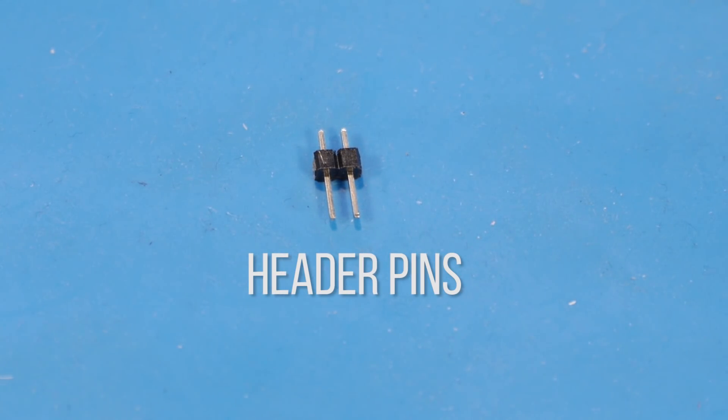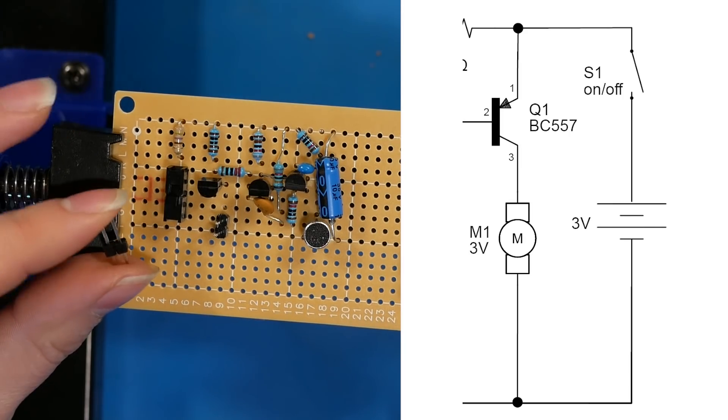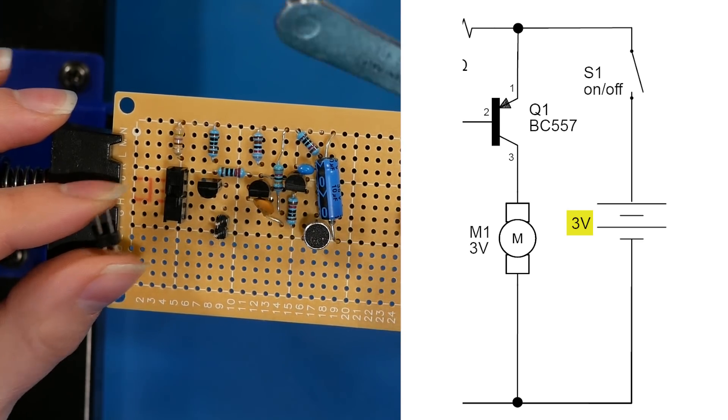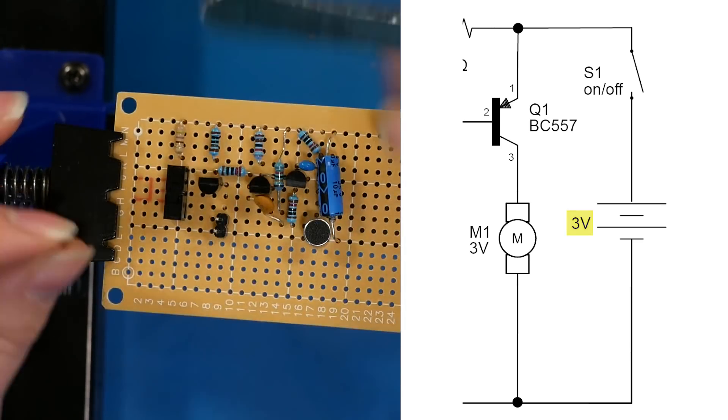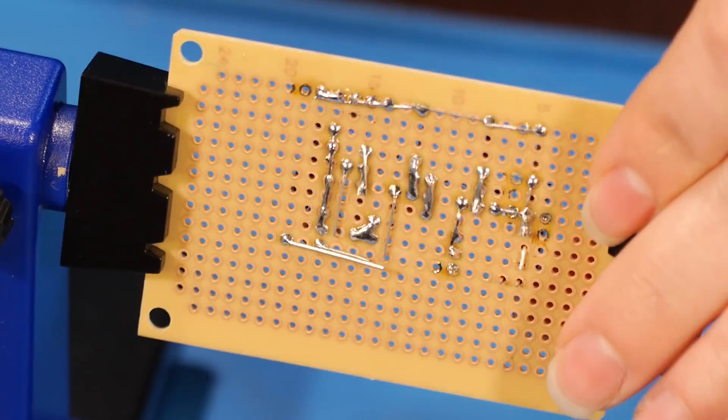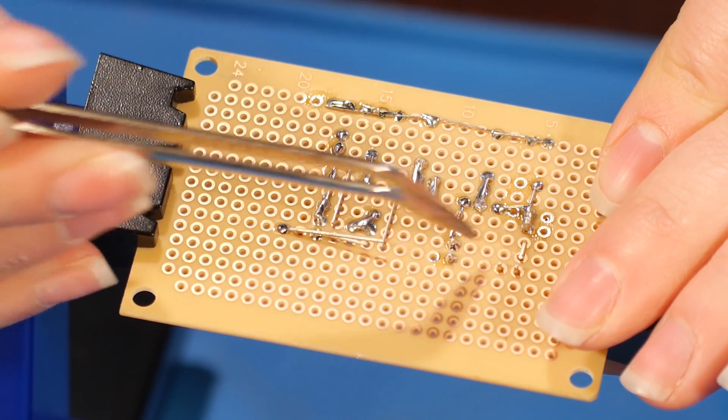The last thing to add is the two pins for my power input. So that needs to connect to the switch on one side and the ground plane on the other. So ideally I would put it here so that it's perfectly in line with the switch here and the ground plane here.